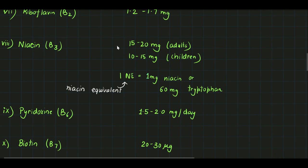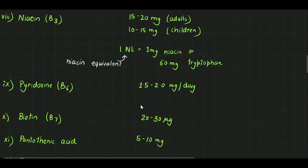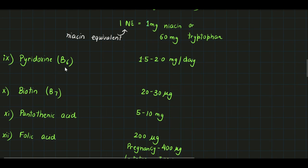For niacin B3, it is 15 to 20 milligrams per day for adults, 10 to 15 milligrams per day for children. One niacin equivalent is considered as one milligram of niacin or 60 milligrams of tryptophan. For pyridoxin B6, it is 1.5 to 2 milligrams per day.